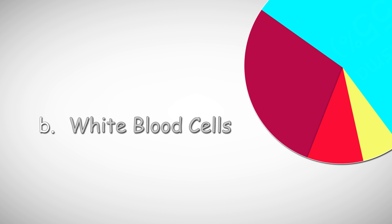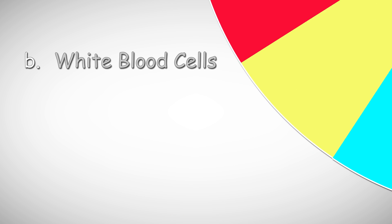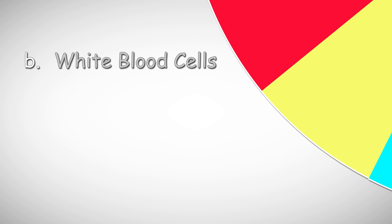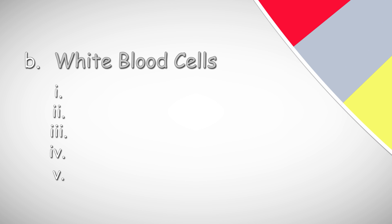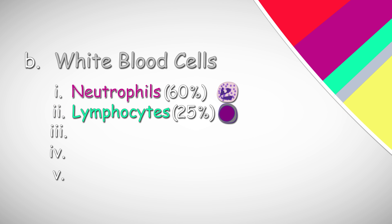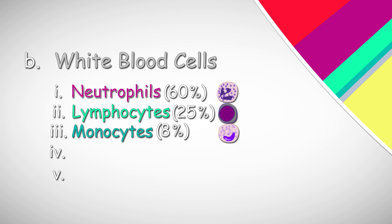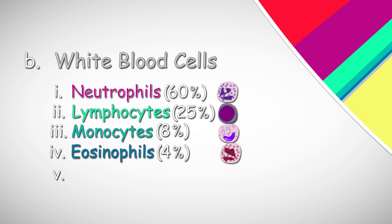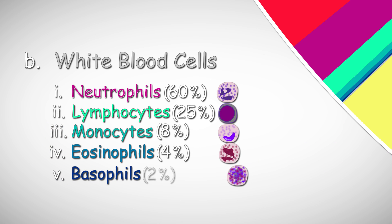The white blood cells, however, are much fewer compared to the red blood cells and only comprise about 6% of the cellular component. These cells are further divided into five different types: neutrophils, being the most abundant covering about 60%; lymphocytes, being the second most numerous; monocytes; eosinophils; and lastly, basophils.